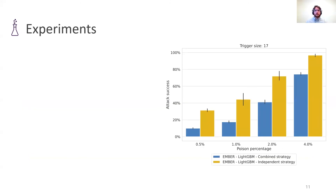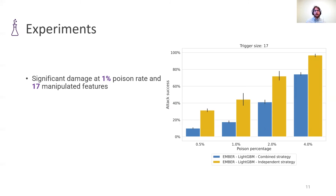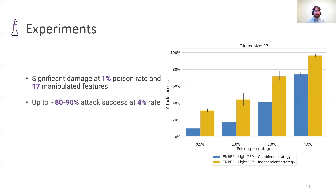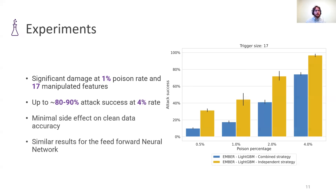Let's take a look at some of the results for our experiments on the Ember dataset. This graph shows the success of the attack over the percentage of the training set that is poisoned. Looking at the combining strategy in blue and the independent one in yellow, the independent strategy leads on average to a higher success rate, but both already cause significant damage at a poisoning rate of 1% of the training set, even for the constrained attacker, which is only allowed to modify 17 out of the 2,381 features of the Ember dataset. The attack scales well with the percentage of poison data, growing to around 80 to 90% success at 4% poisoning, with minimal side effects on clean data accuracy and essentially similar results for the feedforward neural network model.